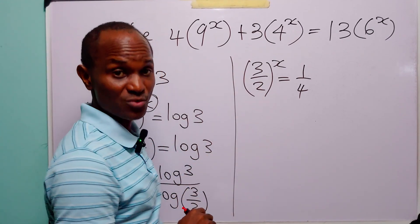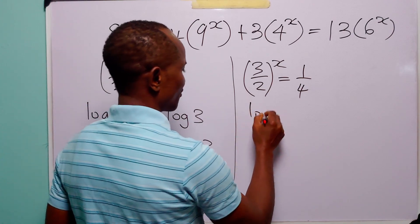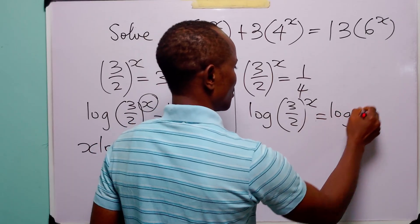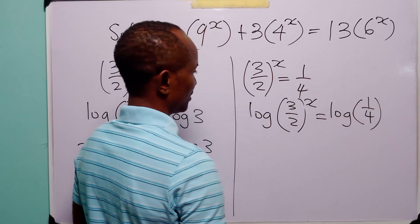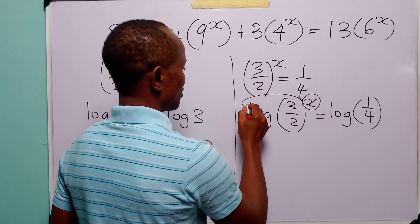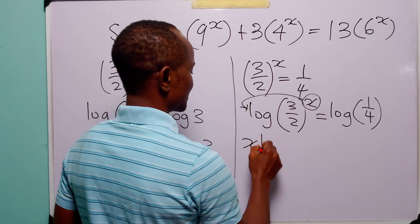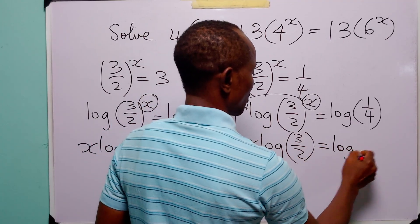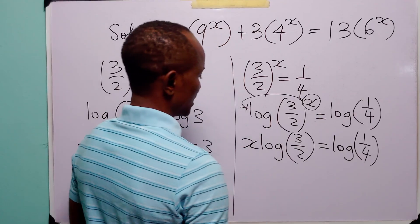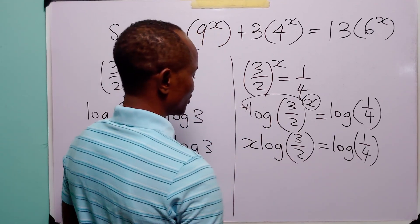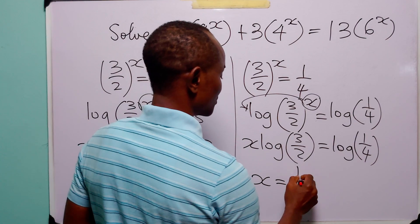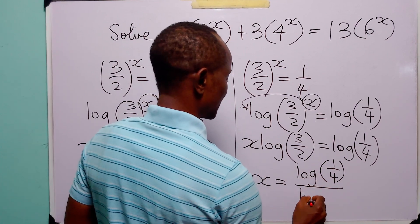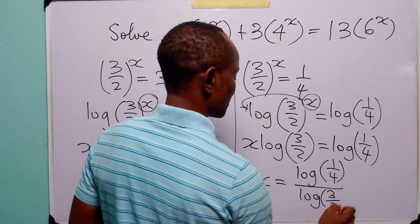In the second case, we do exactly the same thing — we take log of both sides: log (3/2) to power x equals log(1/4). Applying the power rule, x times log(3/2) equals log(1/4). Dividing both sides by log(3/2), x equals log(1/4) divided by log(3/2).